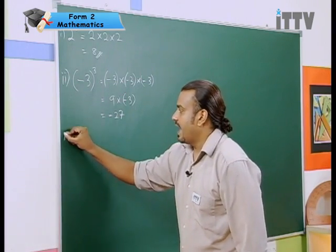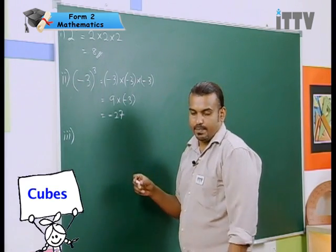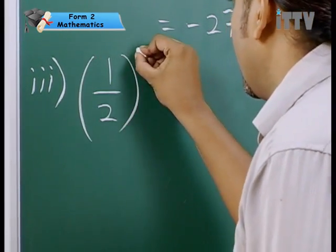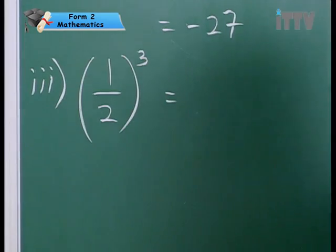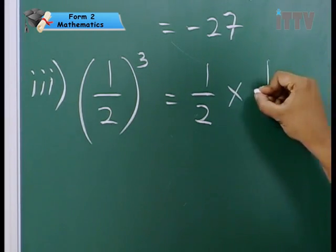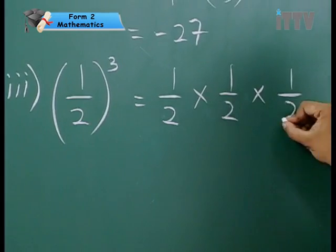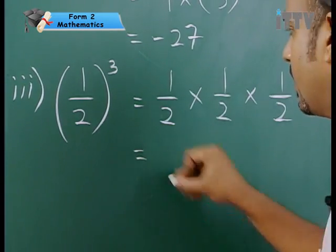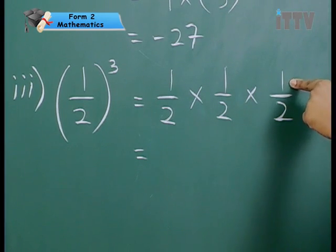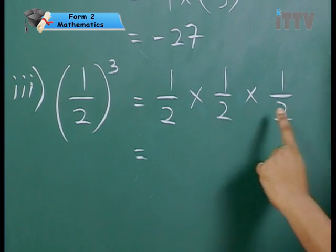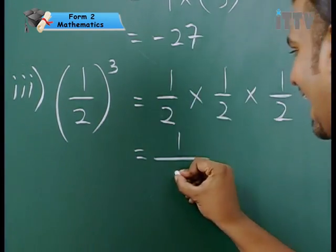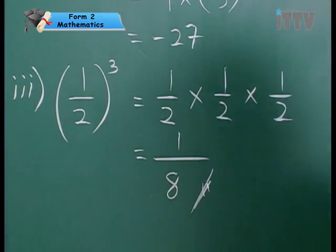Now, let's take a look at example number 3. This example is going to involve a fraction. 1 over 2, whole thing is cubed. Simple, isn't it? 1 over 2, multiply by 1 over 2, multiply by 1 over 2. Thrice. It's going to be numerator, multiply with numerator, multiply with numerator. Denominator, multiply with denominator, multiply with denominator. Collect them all. 1 times 1 times 1 is 1 over 2 times 2 times 2, 8. Answer is 1 over 8.